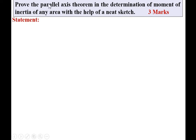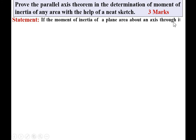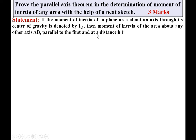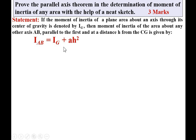First, the statement of the parallel axis theorem: if the moment of inertia of a plane area about an axis through its center of gravity is denoted by Ig, then the moment of inertia of the area about any other axis AB, which is parallel to the first and at a distance h from the CG, is given by: I_AB = Ig + A·h². This is the mathematical statement of the parallel axis theorem.